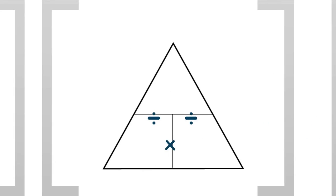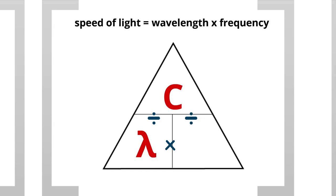Now, the mathematical relationship between light, wavelength, and frequency is this. The speed of light equals wavelength times frequency, and we can represent that in the triangle, as you can see on the bottom. Speed of light is equal to the wavelength times frequency.